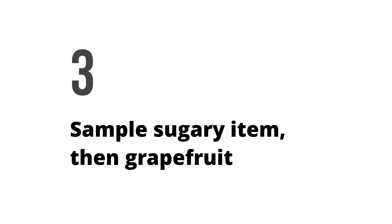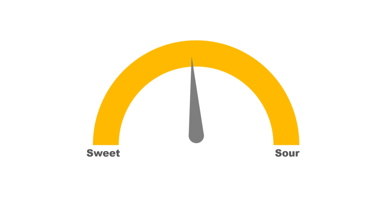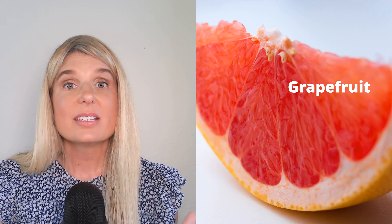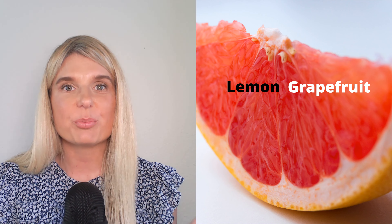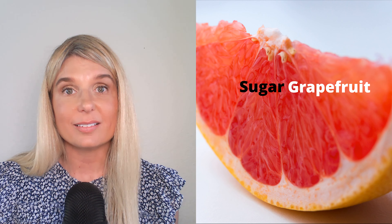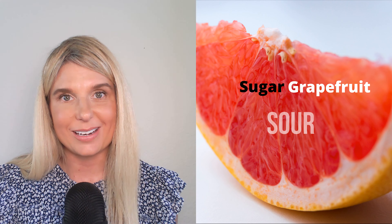Finally, sample your sweet item and then the grapefruit once more. Now my grapefruit tastes sour again, and it's even more sour than it was the first time. In this experiment, we witnessed our perception of the exact same stimulus — the grapefruit — change simply because of prior experience: what we placed in front of it, the lemon and the sweet item.